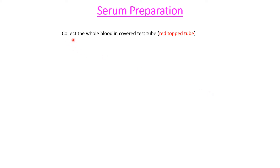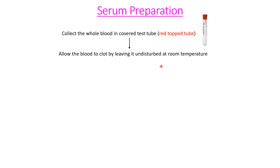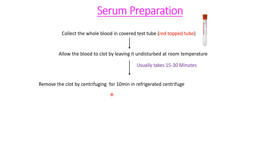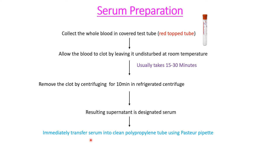Now we will see serum collection. We collect whole blood in a covered red top test tube — the red top indicates this tube is used for serum collection. Allow the blood to clot by leaving it undisturbed at room temperature for 15 to 30 minutes. Then remove the clot by centrifuging for 10 minutes in a refrigerated centrifuge. The resultant supernatant obtained is the serum, which is immediately transferred into a clean polypropylene tube and maintained at 2°C.